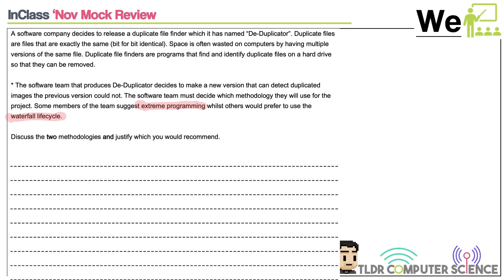The framework I use is K, A, and E — Knowledge, Application, and Evaluation. Knowledge is what we know about the methodology irrespective of context. For waterfall: it's a series of processes going in one direction; it works best when the problem is small and easy to understand; if you have to go back you restart the whole process. For extreme programming: focus on pair programming, rapid prototyping, the programming element; less documentation.